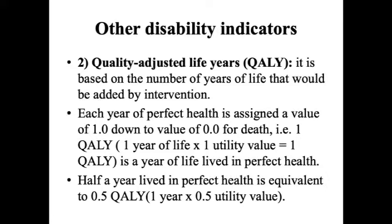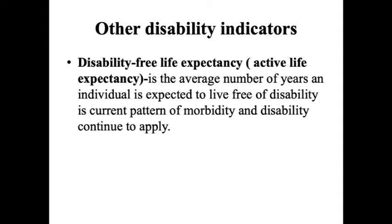One year lived in perfect health is equivalent to 1 QALY, which equals 1 year of life multiplied by a utility value of 1. One year lived at 0.5 health utility equals 0.5 QALY. Disability-free life expectancy, also called active life expectancy, is the average number of years an individual is expected to live free of disability if current patterns of morbidity and disability continue to apply.